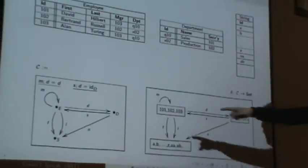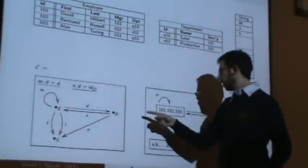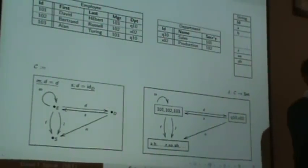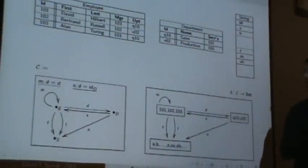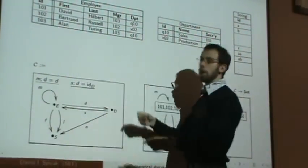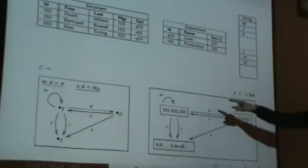And similarly, this D arrow, department here, is taking me from this set to this set. So you can just think of a two column table as a function, and this is just one, two, three, four, two column tables, kind of, each one, one for each arrow.